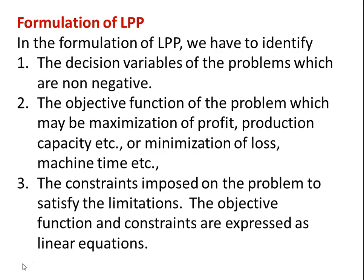So how do we formulate LPP? First, identify the decision variables of the problem, which are non-negative. By studying the physical situation, identify what parameters will influence the decision. Then define the objective function — which may be maximization of profit, maximization of production capacity, minimization of loss, or minimization of machining time. Then identify the constraints imposed on the problem to satisfy the limitations on resources. Both the objective function and constraints are expressed as linear algebraic equations.